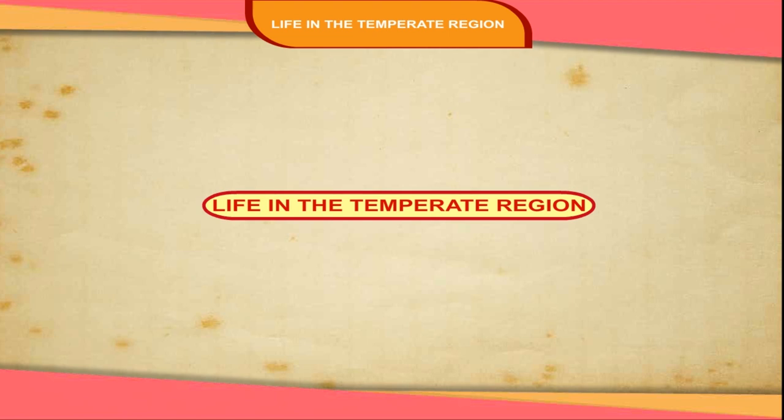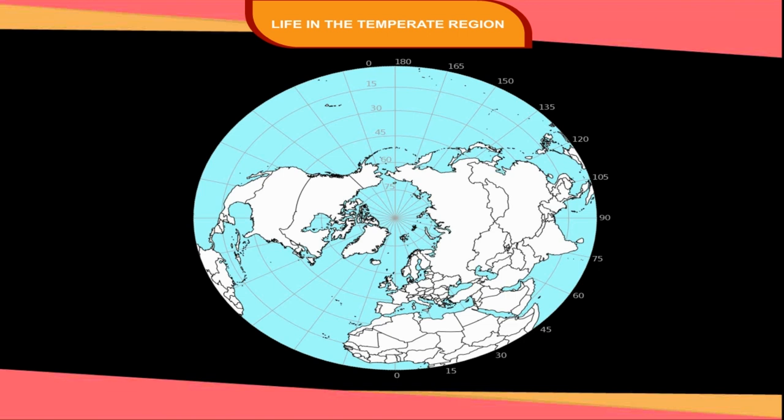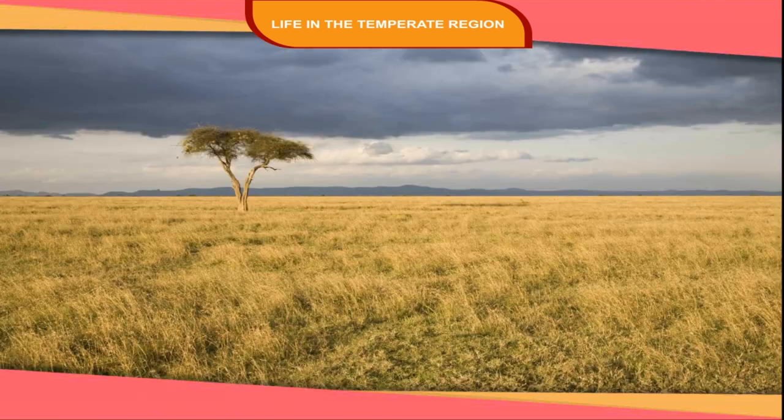Life in the Temperate Region. Temperate grasslands of the world are located roughly between 15 degrees and 30 degrees latitudes in both the hemispheres, in the interiors of the continent. These are regions of temperate grasslands.